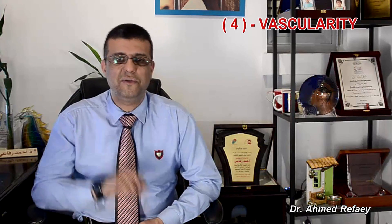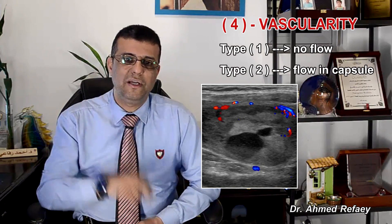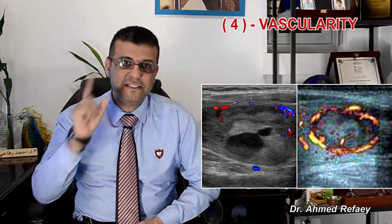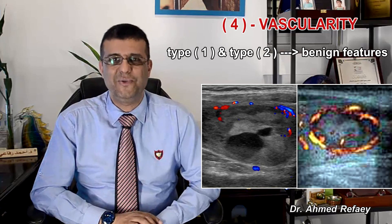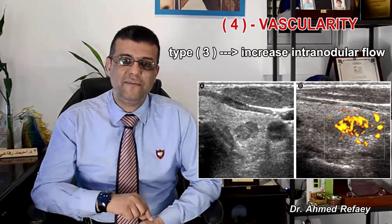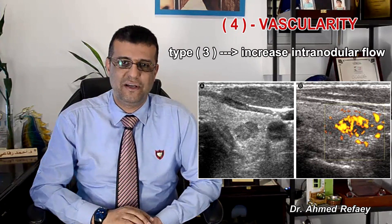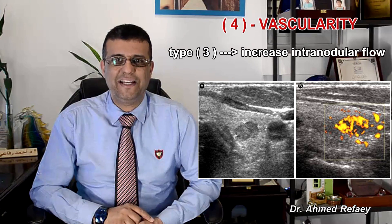Number four, vascularity of the nodule. There are three general patterns of vascular distribution of the thyroid nodule. Type one is complete absence of flow signal within the nodule. Type two is perinodular vascularity. Type one and type two are more common with benign nodules. Type three vascularity is in the form of marked increased intranodular flow, and this type is generally associated with malignant nodules.